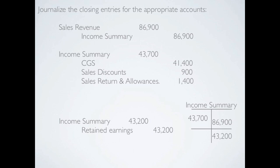I want to point out that you need to take special note of cost of goods sold here. The problem states cost of goods sold is $41,200, but here I'm closing cost of goods sold at $41,400. Remember, the first entry we made was a shrinkage adjustment — we had to expense $200 of inventory that had disappeared, which brought the balance of cost of goods sold to $41,400.